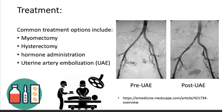Finally, uterine artery embolization (UAE) — this procedure is done under interventional radiology. They simply occlude or block the feeding artery. In the case of bilateral uterine artery embolization, you can see pre and post images. This procedure can be complementary, performed before surgery or myomectomy to shrink and reduce the size of the mass, or it can be used as a standalone treatment. It has many benefits and has been successful in many cases. You can refer to the Medscape article for more images.